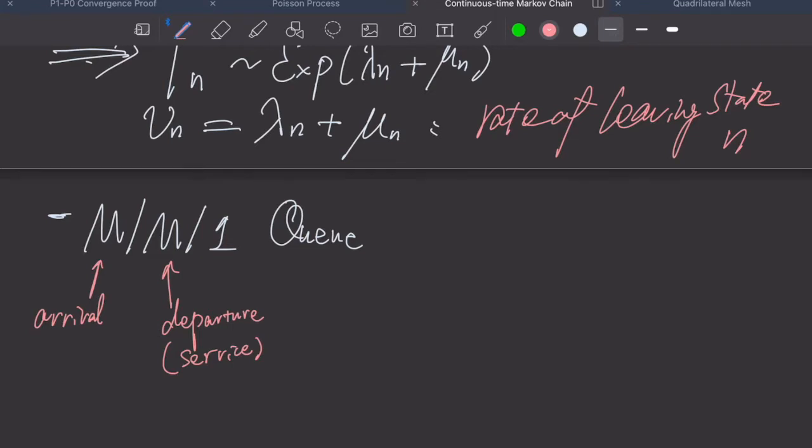I want to remark that this M/M/1 queue follows what's called the FIFO rule. This is first in, first out. It means no job can cut in the line.